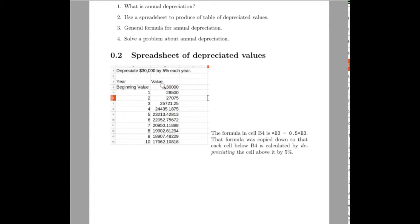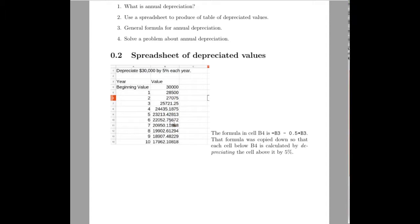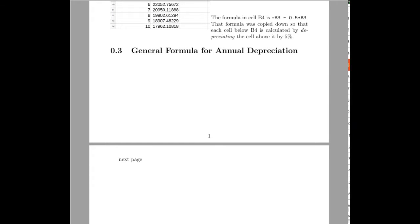What happened here is that we had the starting value, then we depreciated that by 5%, which meant to take that value minus 5% of that value. Then we looked at this next value, depreciated it by 5% — that is, take 5% of that value and subtract it to get the new value. So we continued to depreciate down. That's what it means to depreciate annually by 5%.